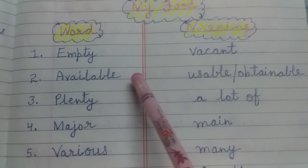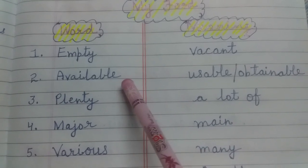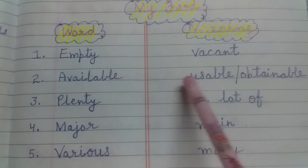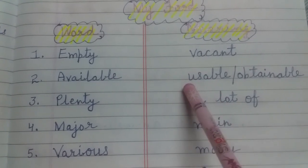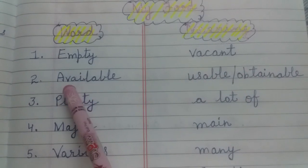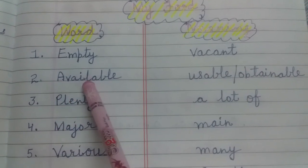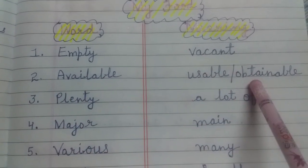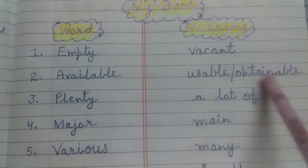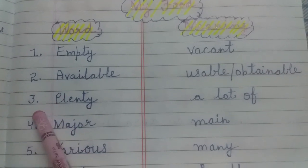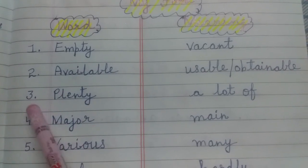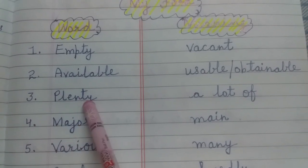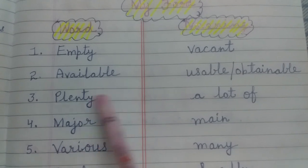जो चीज किसी स्थान पर उपलब्ध होती है, जो चीज किसी स्थान पर मिलती है, जिसे हम use कर सकते हैं। Second word: available, meaning usable or obtainable. Third word: P-L-E-N-T-Y — plenty.